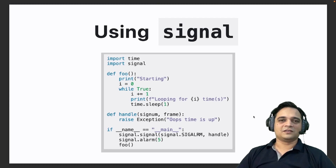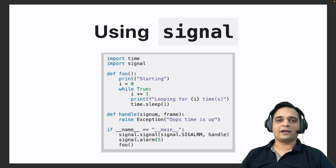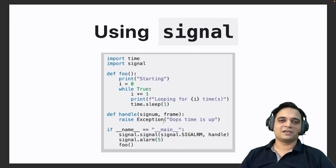The signal module allows us to set an alarm, and for that alarm we can also set a handler. In this case, we have a function called foo which is running infinitely, just looping and printing. We've written a particular handler, and in these two lines we specify the signal and the handler for our code. After the five-second alarm, this handler gets invoked, which raises an exception saying we're out of time.